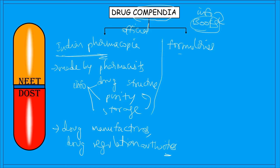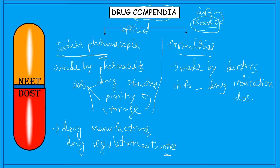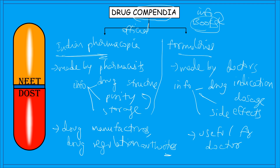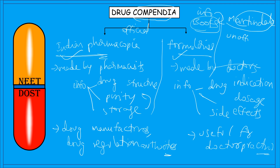The formulary is prepared by doctors and contains information about drug indications, drug dosage, and the effects or side effects of drug usage. It is useful for doctors and clinical practitioners. The unofficial compendia is Martindale, published every two to three years by the Royal Pharmaceutical Society of Great Britain.